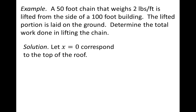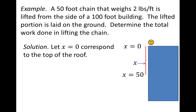A key problem-solving strategy is to set up a picture and label where x = 0 is. There are three natural choices: x = 0 could be the ground, the bottom of the chain, or the top of the roof. All three would give the same answer. We'll choose x = 0 at the top of the roof, so x = 50 corresponds to the bottom of the chain, and x increases as we move down. In our picture, there's our person at the top of the roof, the chain in red, with x = 0 at the top and x = 50 at the bottom.